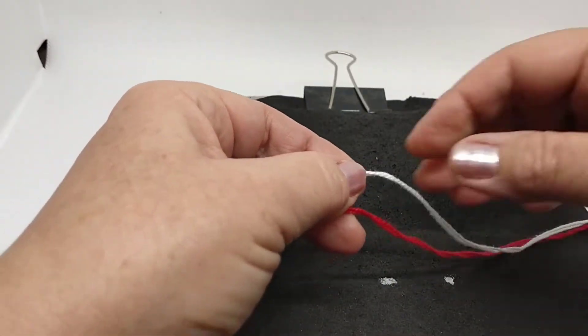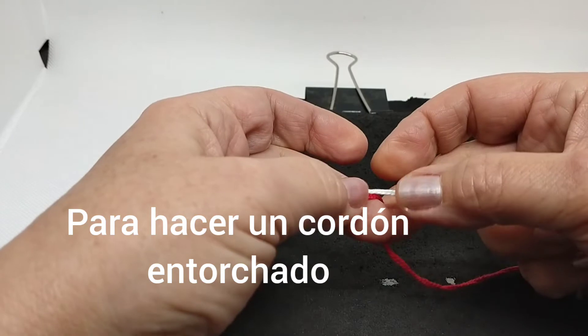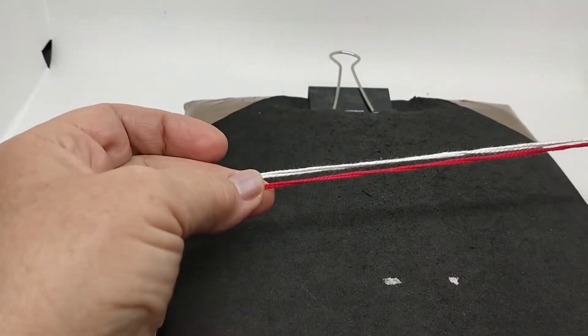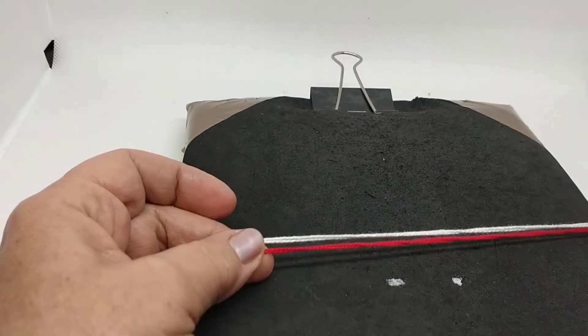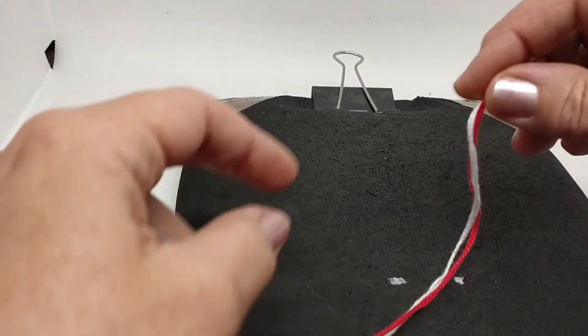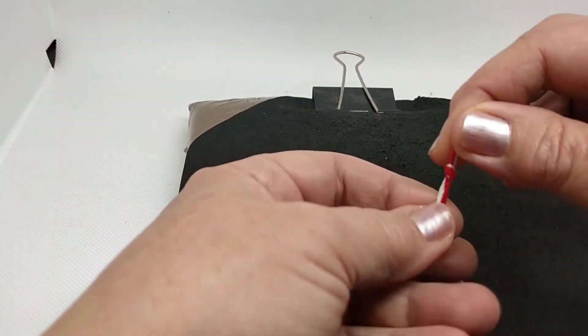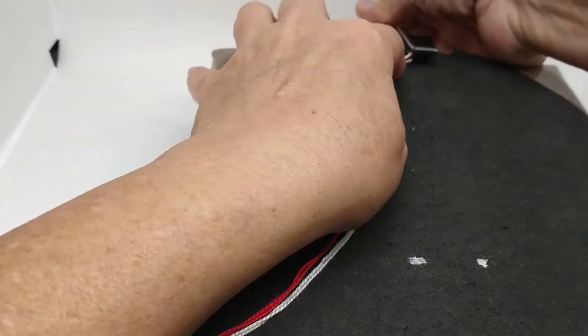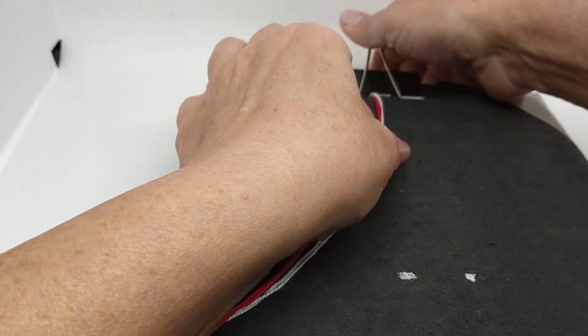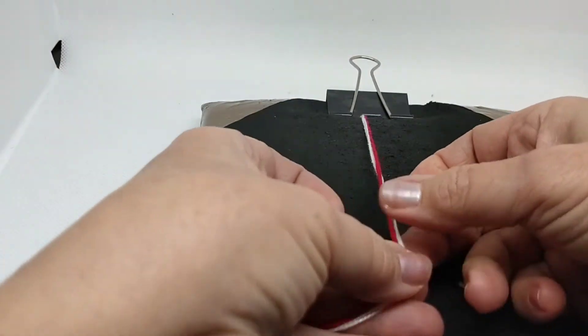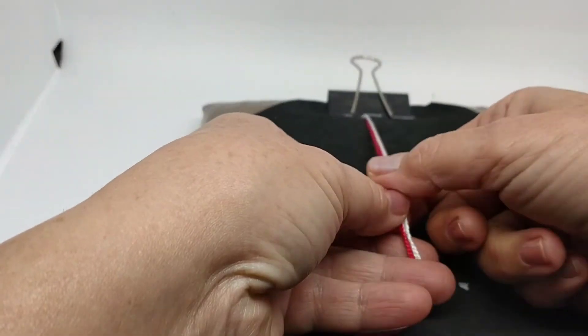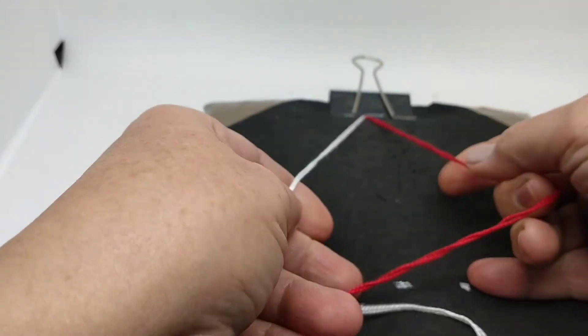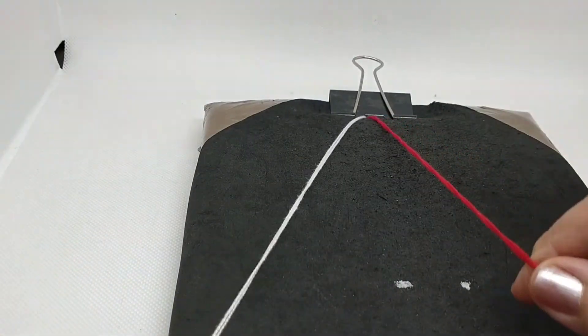He cogido dos hebras de blanco y dos hebras de rojo, de unos 60 centímetros, que equivalen a unas 32 pulgadas y media. Anudamos en el extremo y me voy a valer de esta pincita para sujetarme aquí el extremo. Ahora cogemos las dos hebras blancas por un lado y las dos rojas por otro.